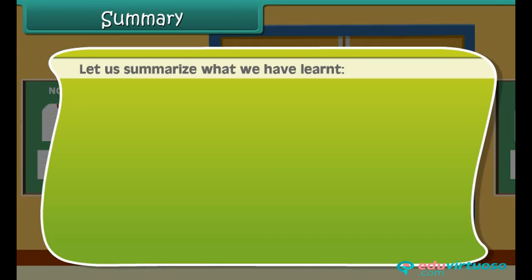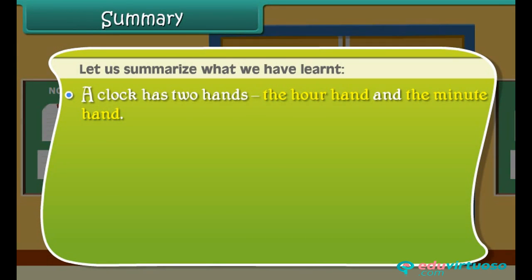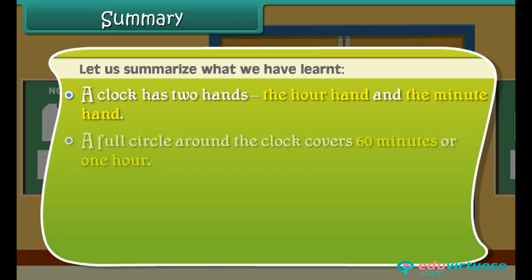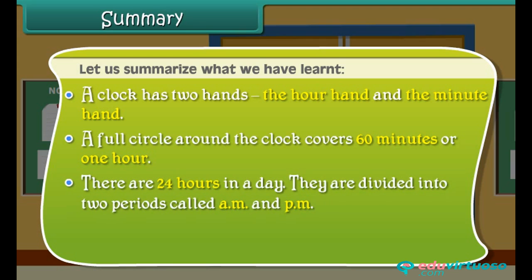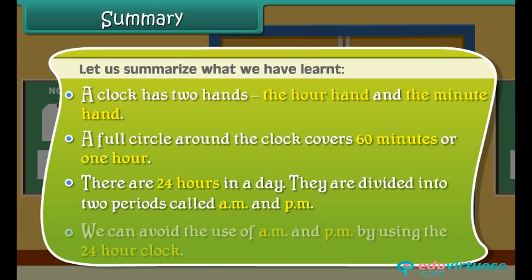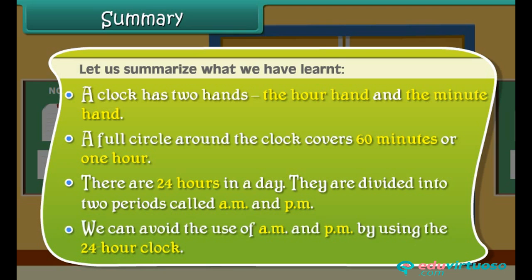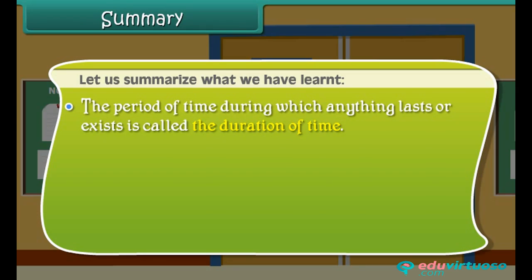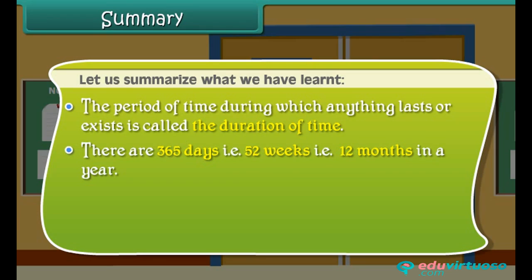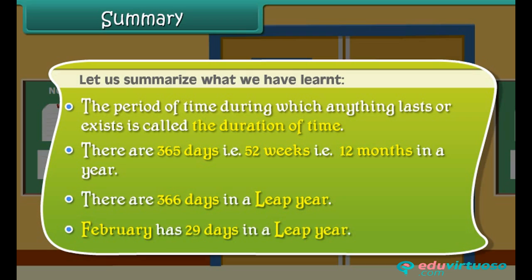Summary. A clock has two hands: the hour hand and the minute hand. A full circle covers 60 minutes or 1 hour. There are 24 hours in a day, divided into two periods called AM and PM. We can avoid AM and PM by using the 24-hour clock. The duration of time is the period during which anything lasts or exists. There are 365 days, that is 52 weeks, that is 12 months in a year. There are 366 days in a leap year, and February has 29 days in a leap year.